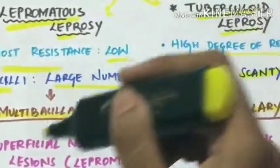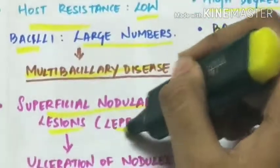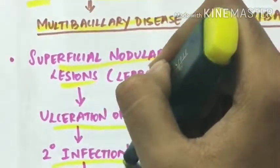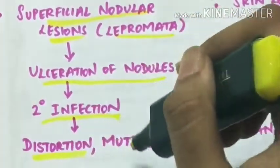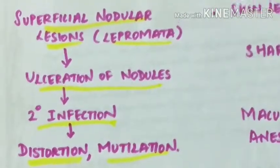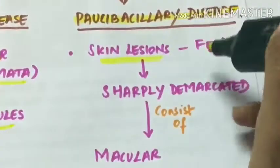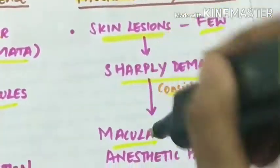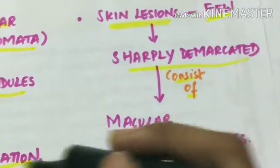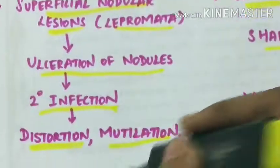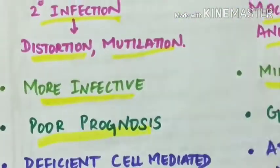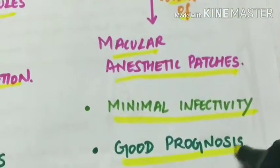In lepromatous leprosy, superficial nodular lesions called lepromata are seen, which lead to ulceration of nodules, progressive secondary infection, causing distortion and mutilation. In tuberculoid leprosy, skin lesions are few, sharply demarcated, and consist of macular anesthetic patches. Lepromatous leprosy is more infective and has poor prognosis, whereas tuberculoid leprosy has minimal infectivity and good prognosis.